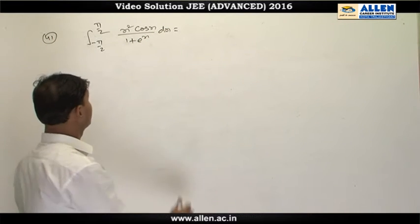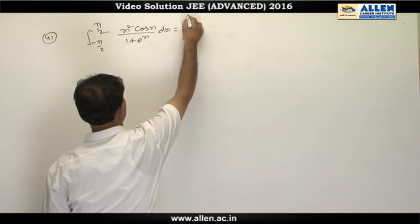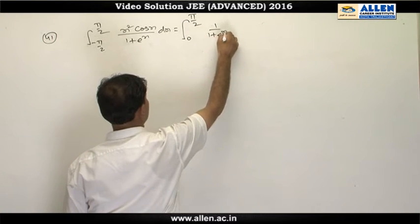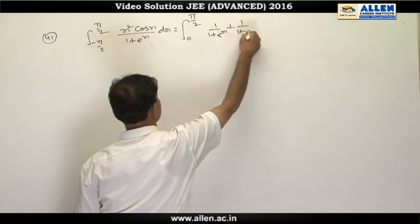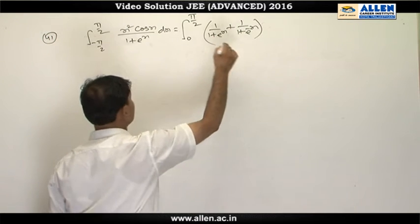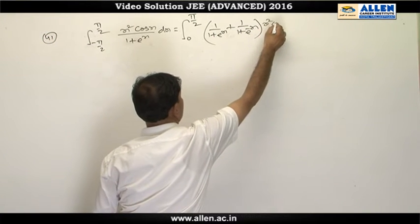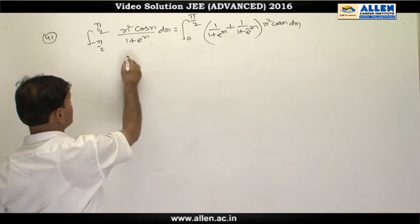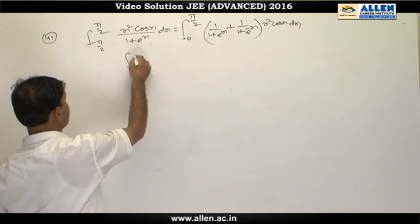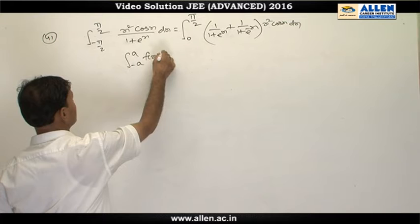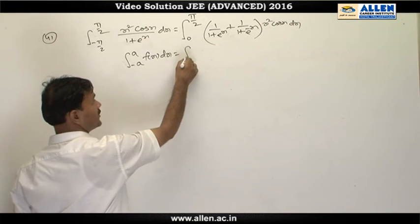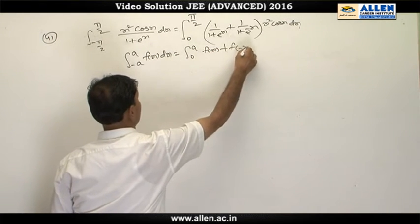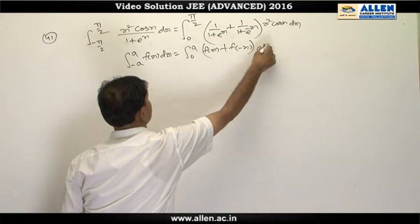Now we can rewrite the value of this integral as integrating from 0 to π/2 of 1/(1+e^x) plus 1/(1+e^(-x)) times x squared cos x. We are rewriting using the fact that the integral from -a to a of f(x) dx equals the integral from 0 to a of f(x) plus f(-x) dx.